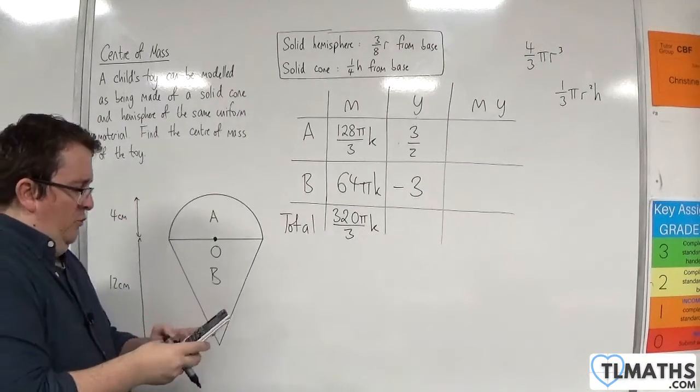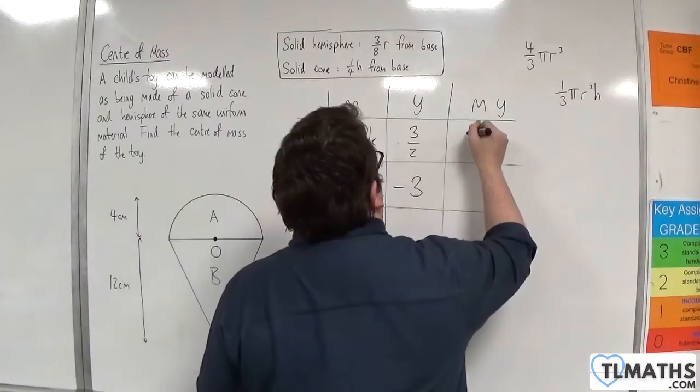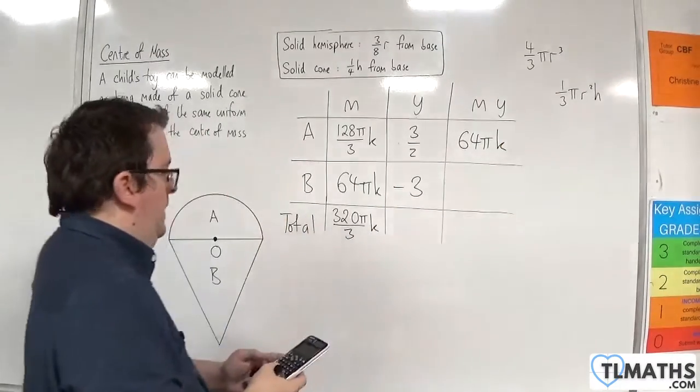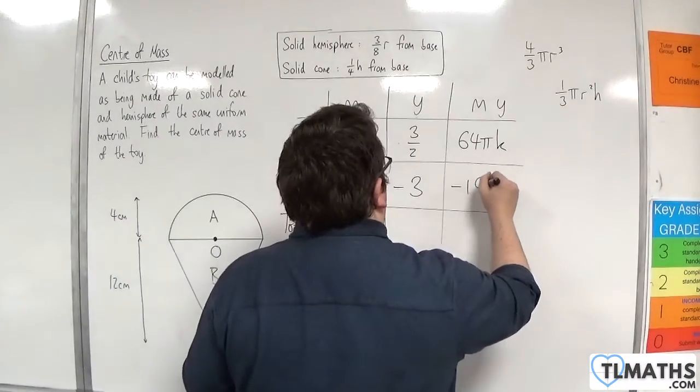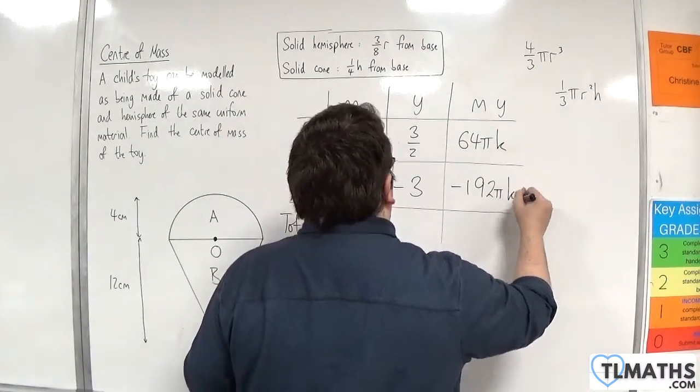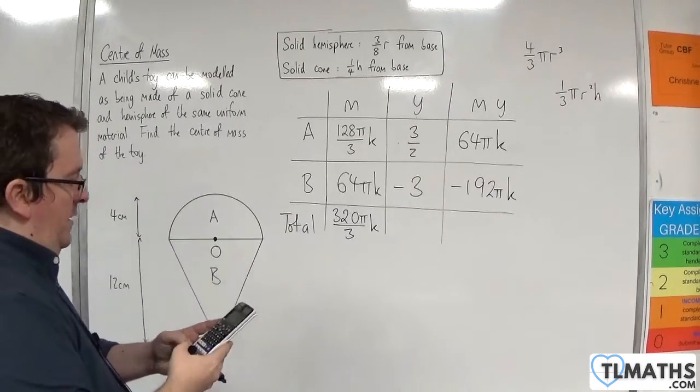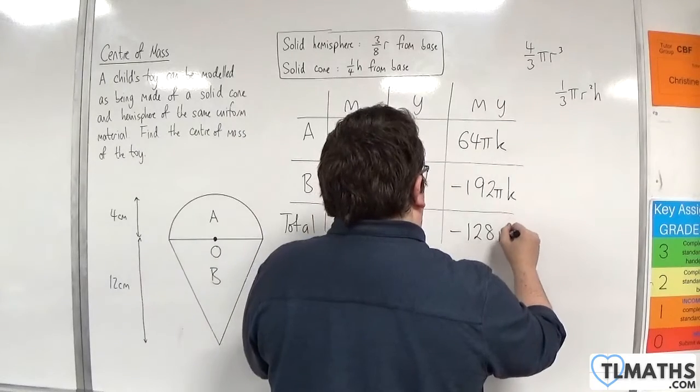So we've got 128 over 3 times by 3 halves, and that's 64 pi K. And then 64 times 3, so minus 192 pi K. So we've got 64, take away 192, so that's minus 128 pi K.